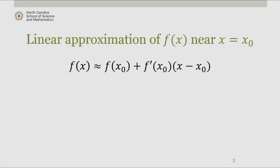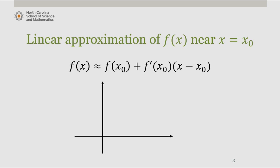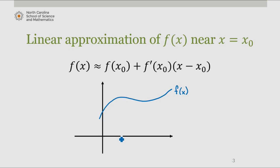Linear approximations of functions near a point were generated by matching both the function value and the slope at a certain point with the line we're generating. These lines gave us approximations of the function of interest, but the approximations were only good very close to the point of interest, as we can see in this following graph. If we generate a linear approximation off of x sub 0, it is good in some neighborhood around x sub 0, but we wouldn't want to use it to approximate the function far away from x sub 0.